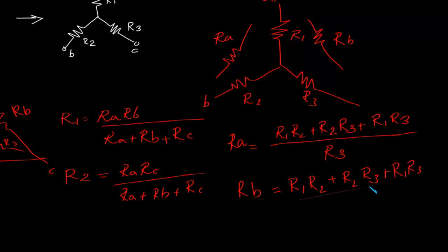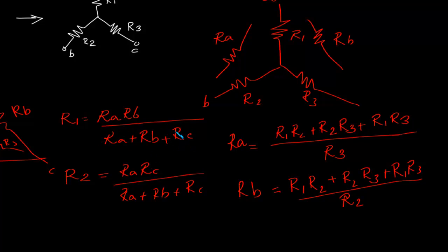Rb is divided by the resistance opposite to Rb, which will be divided by R2. You can also verify that the dimensions should be the same — the numerator must be the product of two resistance terms, such as Ra·Rb, and you have to divide it by one resistance term, that means Ra plus Rb plus Rc, to get the same unit or same dimension.